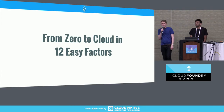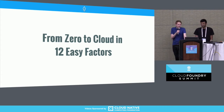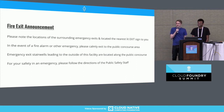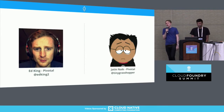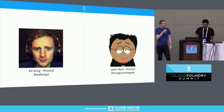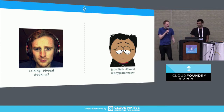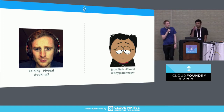Hello everyone. Thank you very much for joining us today. This talk is from zero to cloud in 12 easy factors. My name is Ed King. I'm an engineer working for Pivotal out of the London office, currently working on the Cloud Foundry Garden team. And this is my colleague Jatin, who works with me in London as one of the engineering leads down there.